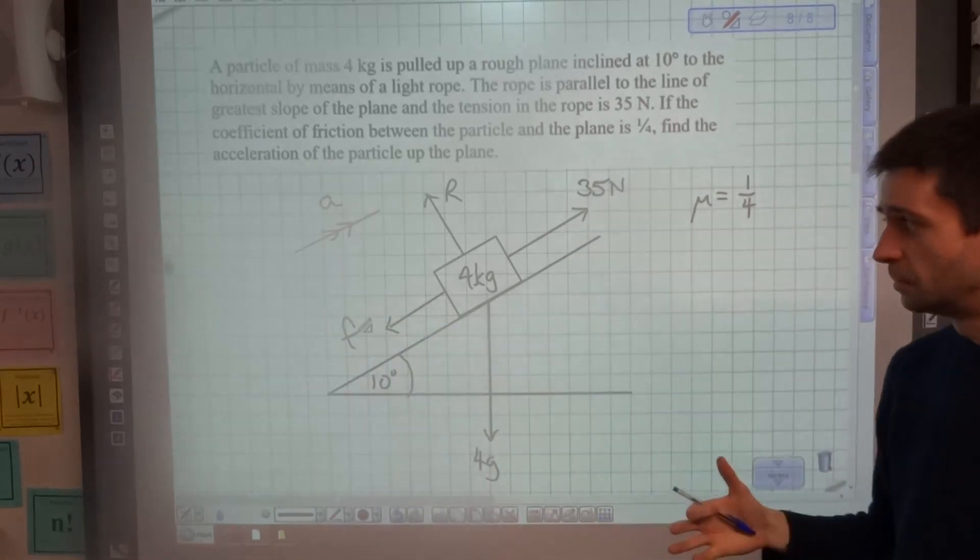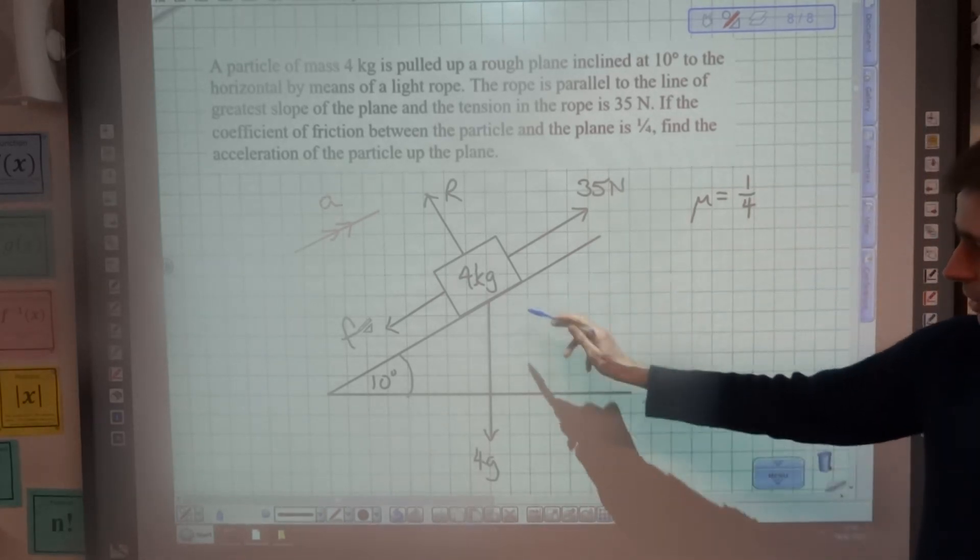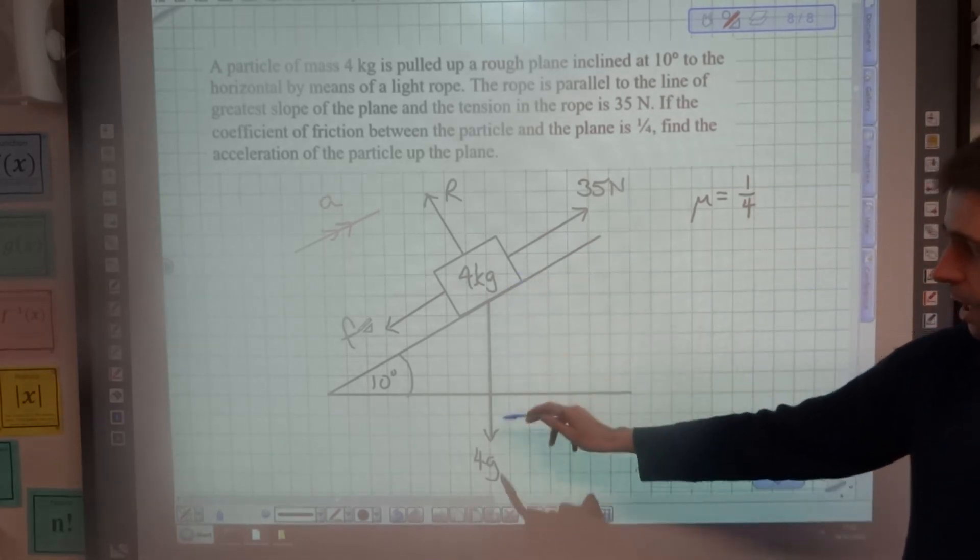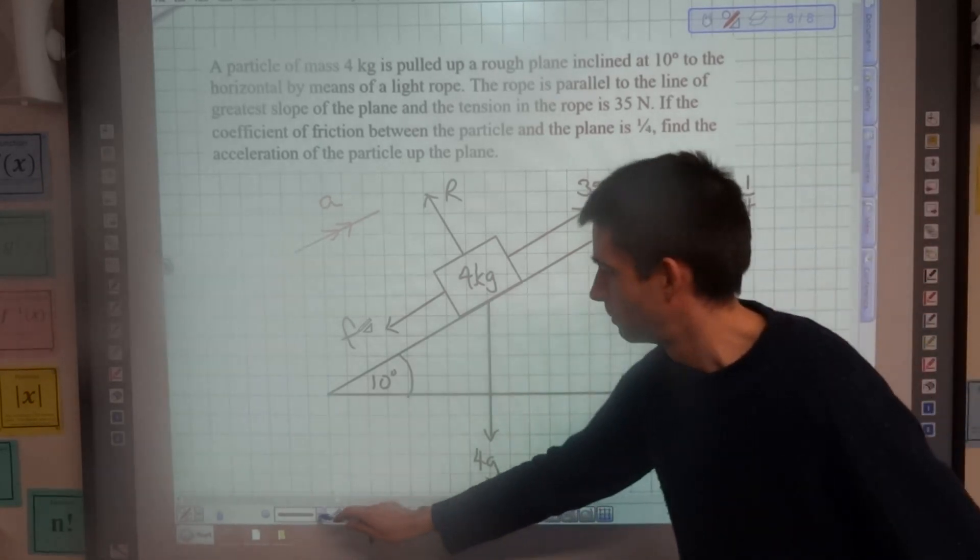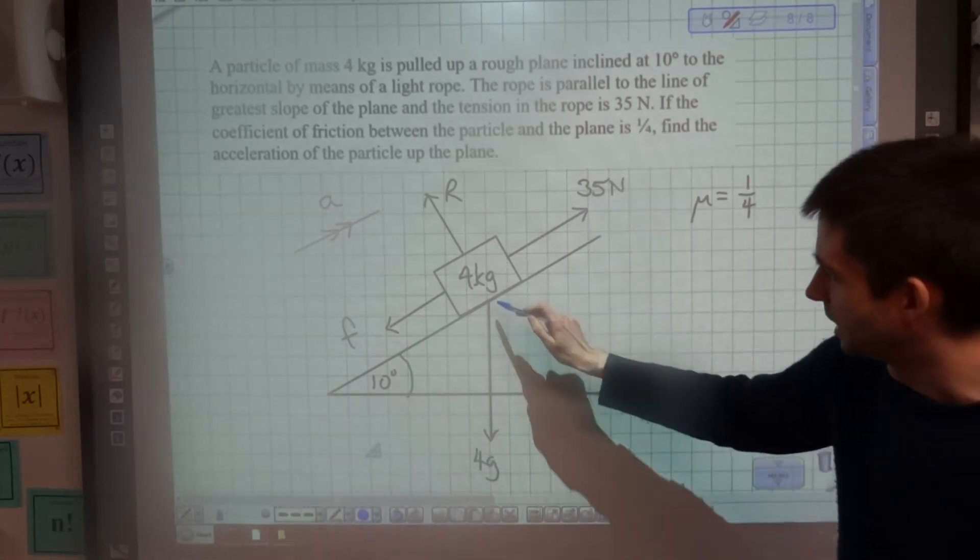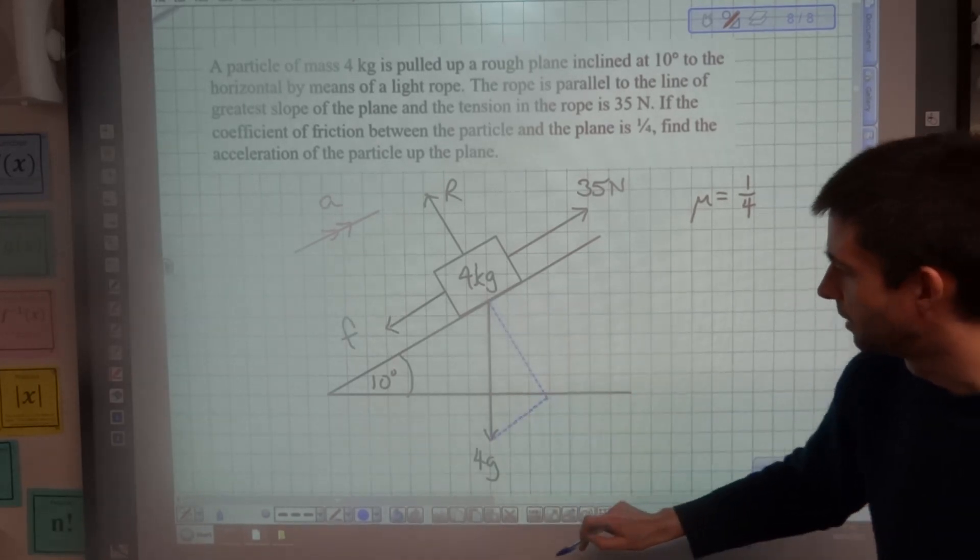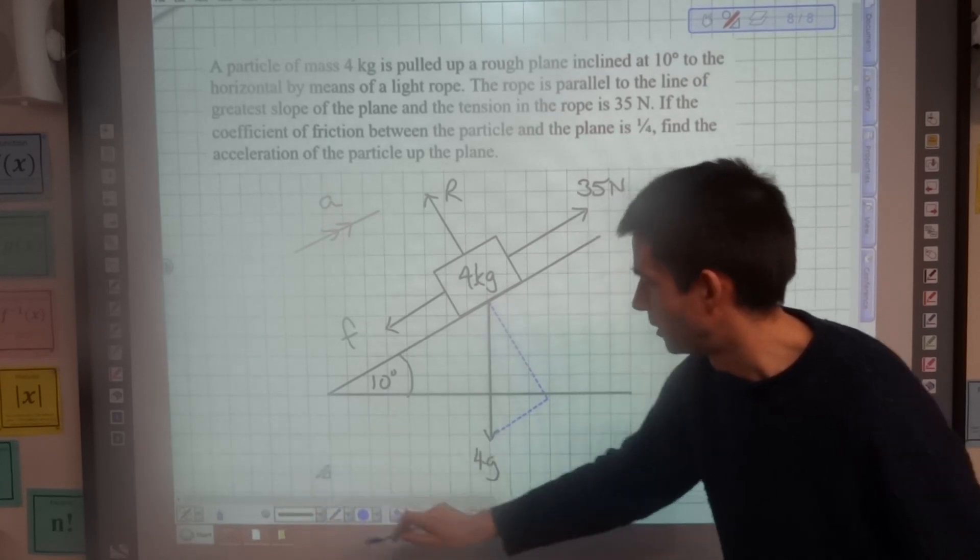Because the particle is moving, friction is going to be taking its maximum value. Okay, next thing I need to do is separate this weight into its component parts, perpendicular and parallel to the plane. So let's draw in the perpendicular one and let's draw in the parallel one using dashed lines to show that they are components.